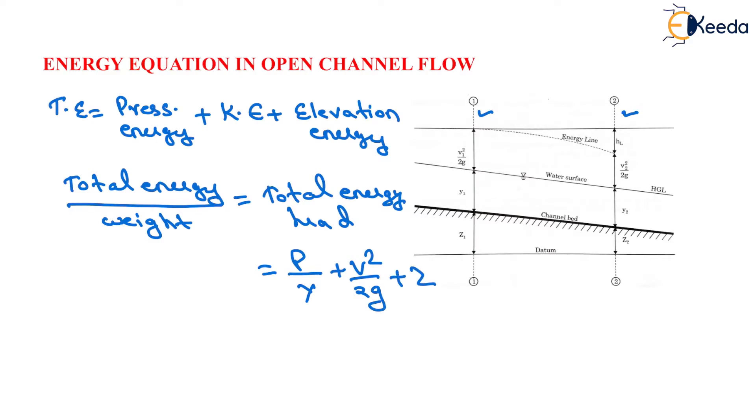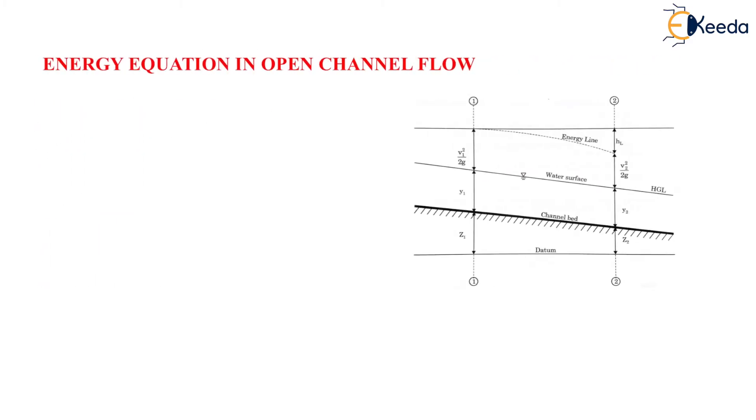Now, applying energy equation between section 11 and 22 we will have P1 upon gamma plus V1 square upon 2G plus Z1 will be equals to P2 upon gamma plus V2 square upon 2G plus Z2 plus head loss.